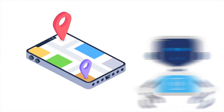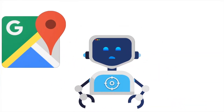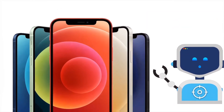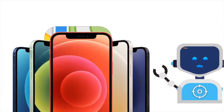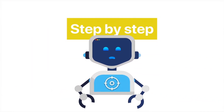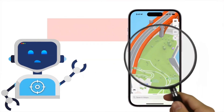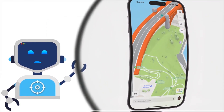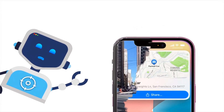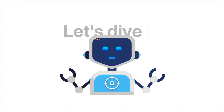Do you ever feel lost using navigation apps or frustrated switching between Google Maps and Waze? If you've got an iPhone, you already have a powerful navigation tool built right in: Apple Maps. I'll walk you step by step through Apple Maps on iPhone. We'll cover everything from basic map views and searching to advanced features like adding stops, using Siri, and even exploring airports and malls with indoor maps. Let's dive in.